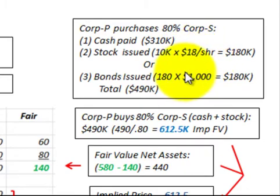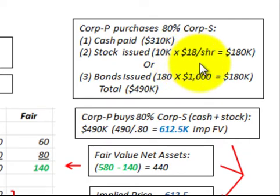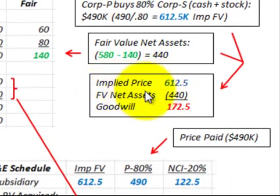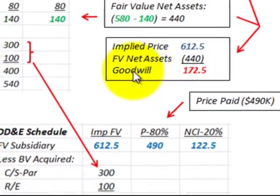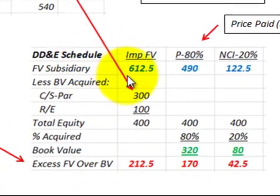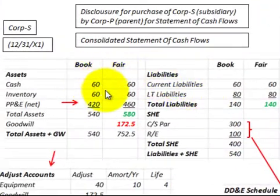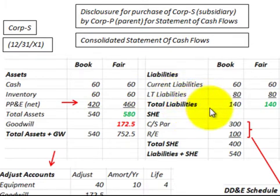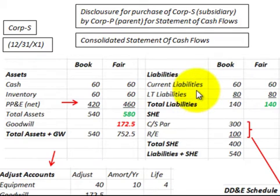We're going to be looking at the disclosure that has to be made for the parent corporation purchasing the subsidiary corporation. For our example, we would have to determine the fair value of net assets and the implied price, and whether there's any goodwill. Then we'd develop a distribution schedule and work off of corporation S's balance sheet.